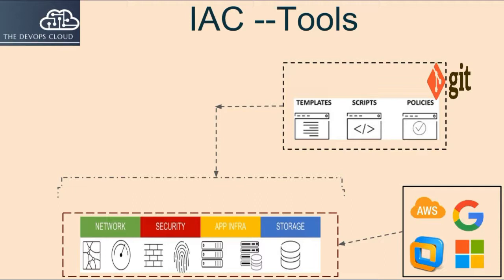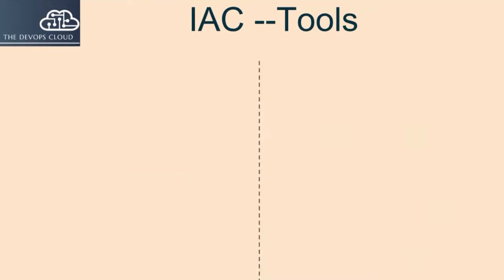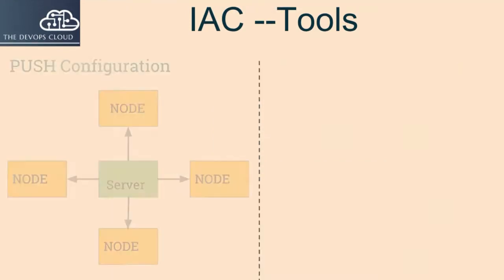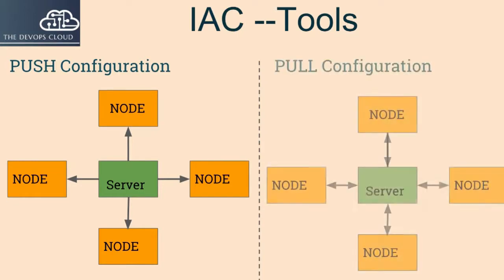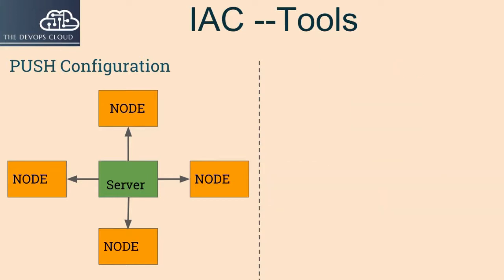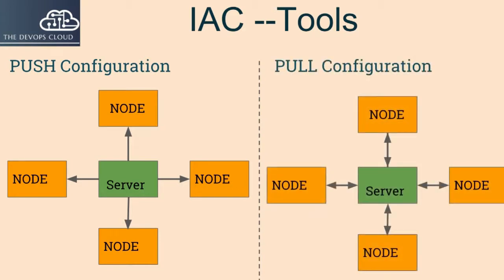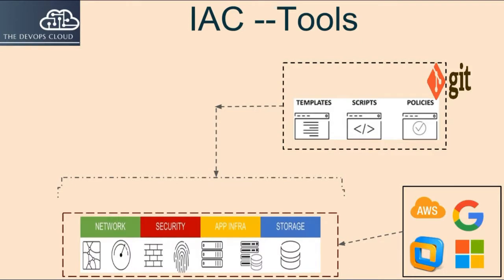Infrastructure as Code tools enforce the setup from the template via push or pull methods. In the push method, a centralized server sends the desired configuration to a specific system or systems. The pull method is initiated by a request to a centralized server from a system or systems in the infrastructure. Tools typically are designed by default for push or pull deployment of code, but can be set up for specific instances to do the other. These tools should also be able to roll back changes to the code, as in the event of unexpected problems from an update.